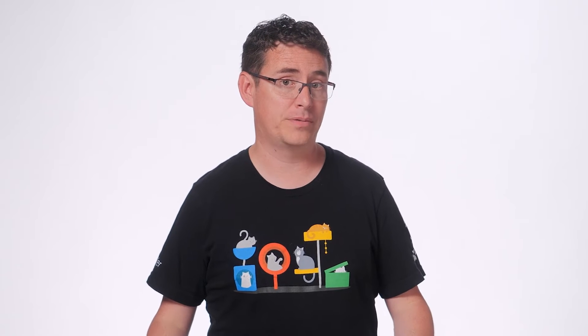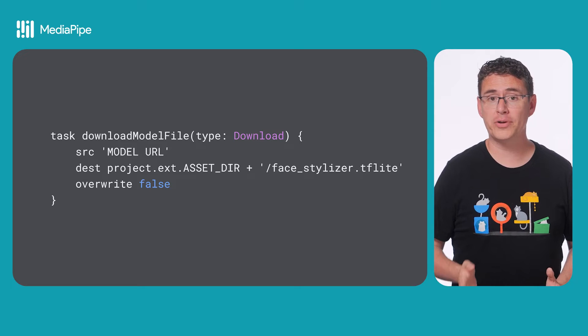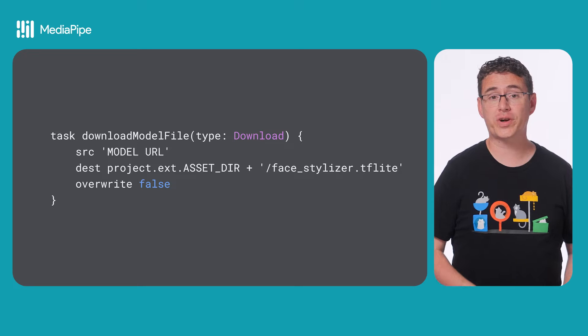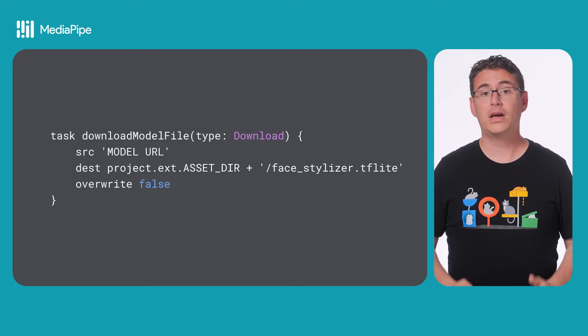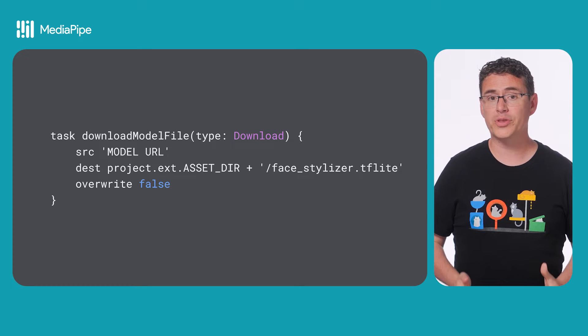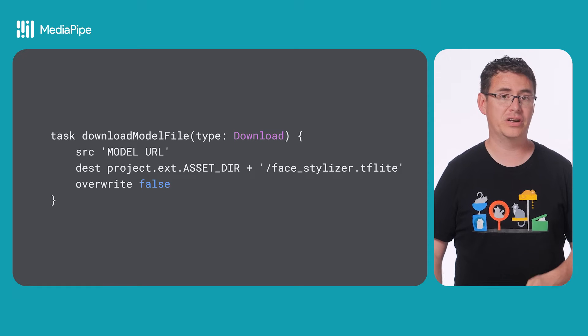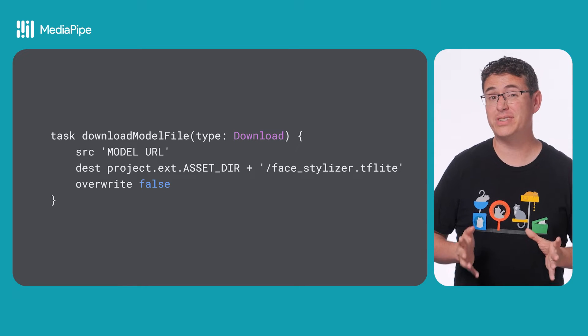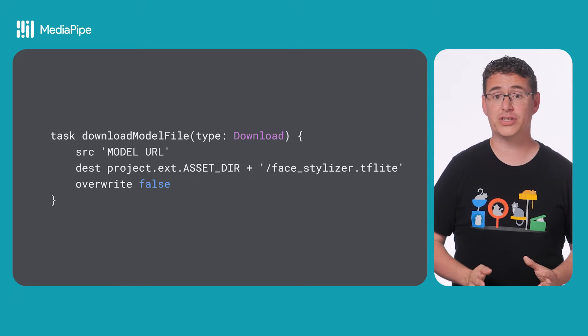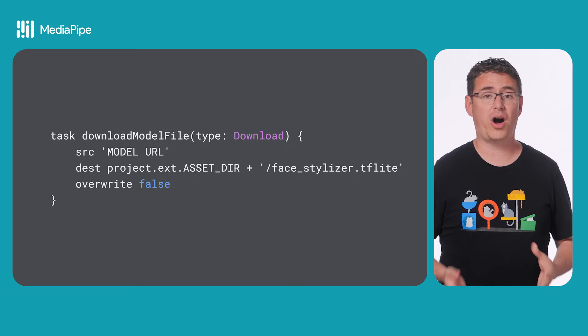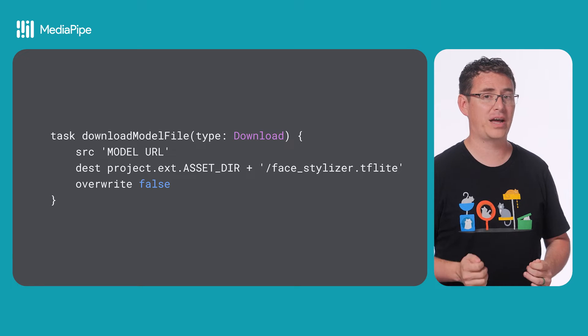Now that you have a high-level understanding of what's happening with face stylization, let's go ahead and implement it on Android. You'll start by downloading a model file and storing it in your app's assets folder. If you're following along with our sample on GitHub, which I'll link to in the video description, then you'll actually download a few different models that you can try, and this will be handled for you automatically by a build script.